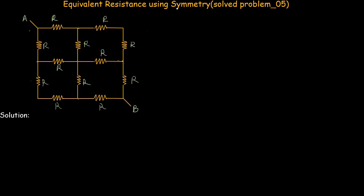In this video lecture we will be solving another problem related to the symmetry of networks. We discussed in previous video lectures what symmetry is, its rules, and the two types of symmetries: vertical symmetry and horizontal symmetry. In this video lecture we have a problem in which we are asked to find out the equivalent resistance between point A and point B.